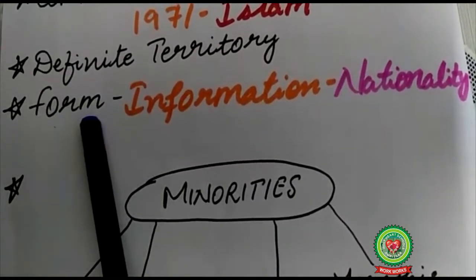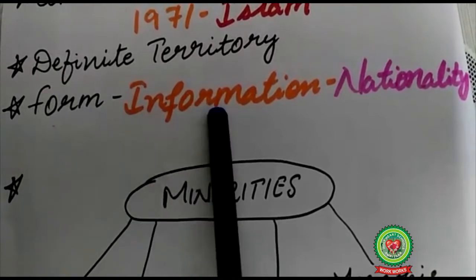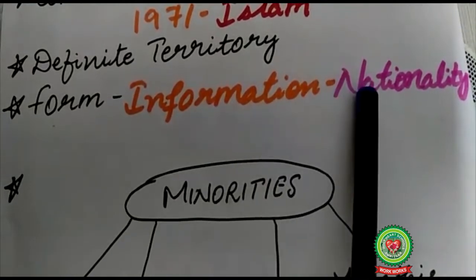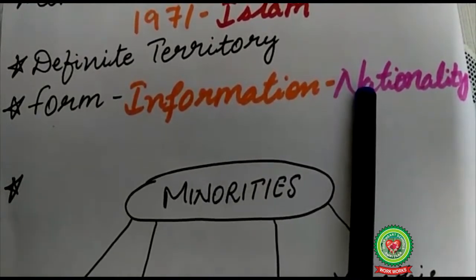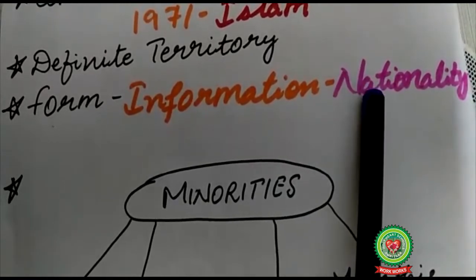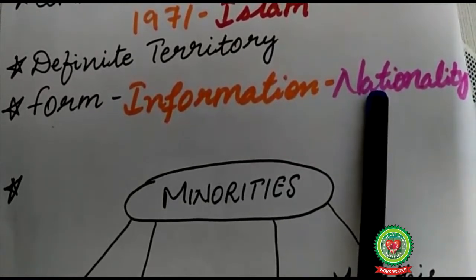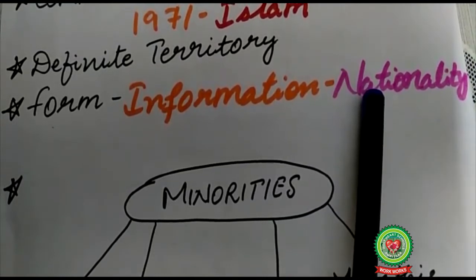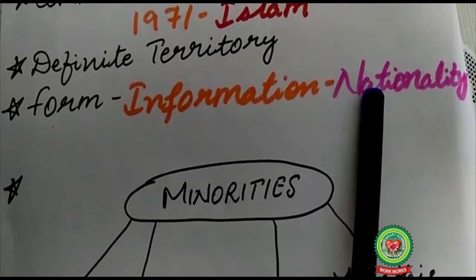Moreover, when you go to fill up some form, you are asked about certain information including your nationality. What you fill in that column reflects your citizenship. So nationality means your citizenship — it is the common tie that is filled up in such forms.